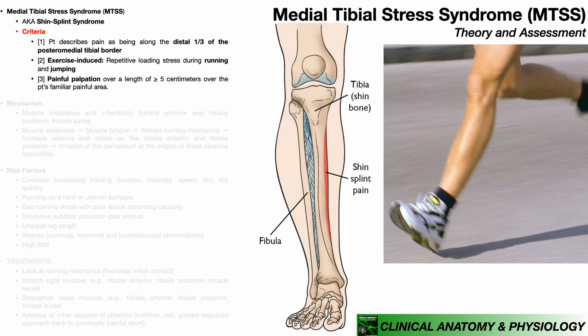In this video, we're going to be doing an overview of a condition called medial tibial stress syndrome, usually abbreviated MTSS, more commonly known as shin splint syndrome or just shin splints. If you look at this image of the right lower leg, you can see in red the typical location of shin splint pain — the attachment site of muscles that get overworked in MTSS, like the tibialis posterior and even the tibialis anterior.